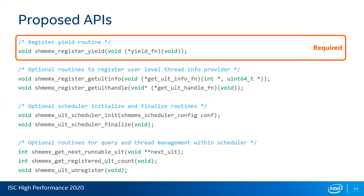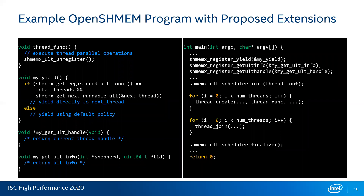Next I'm going to show an example of an instrumented program with these proposed extensions. In the main function, before starting the threads, it calls the register APIs we proposed. It registers the yield function, the getULTINFO which returns the thread ID and shepherd ID, and the getULThandle which returns the thread handle. After that, the ULT scheduler initialize is called, which initializes the OpenSHMEM library scheduler. Then thread create and thread join happen as in any multi-threaded application, and before SHMEM finalize, the scheduler finalize is called.